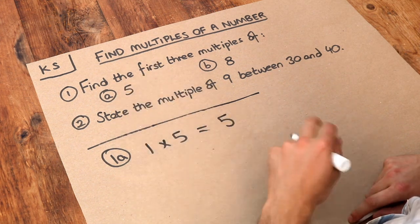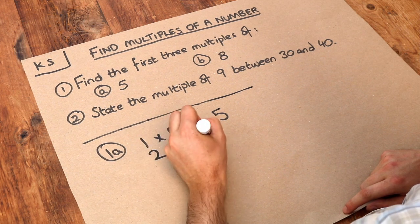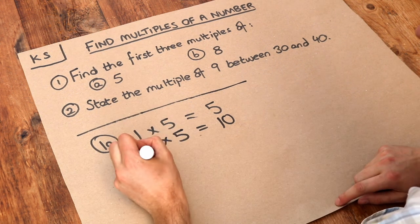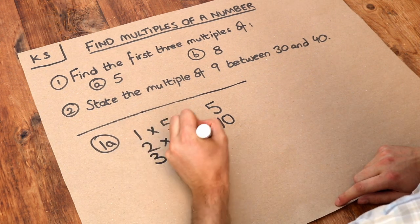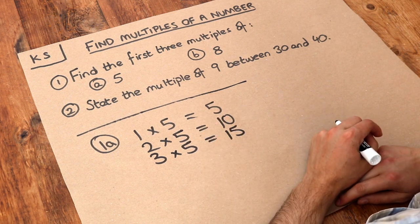If I had more than one lot of five, two times five, two lots of five, is ten. So ten is a multiple of five. If I had three times five, that's fifteen. So those are the first three multiples of five.